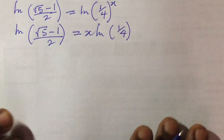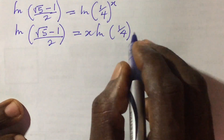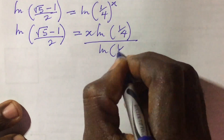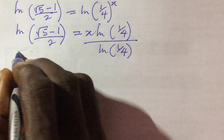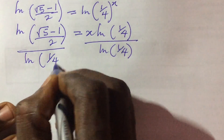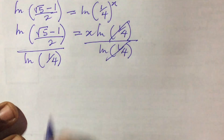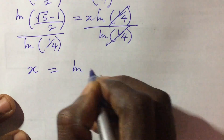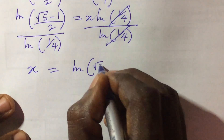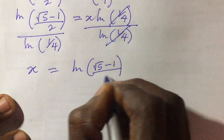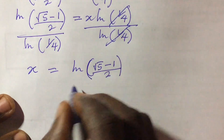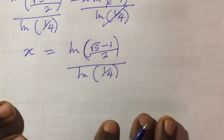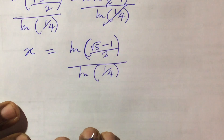From this point we can divide through by ln(1 all over 4). Dividing both sides, the right-hand side simplifies to just x. So our x becomes x equals ln of (root 5 minus 1 all over 2), all over ln(1 all over 4).